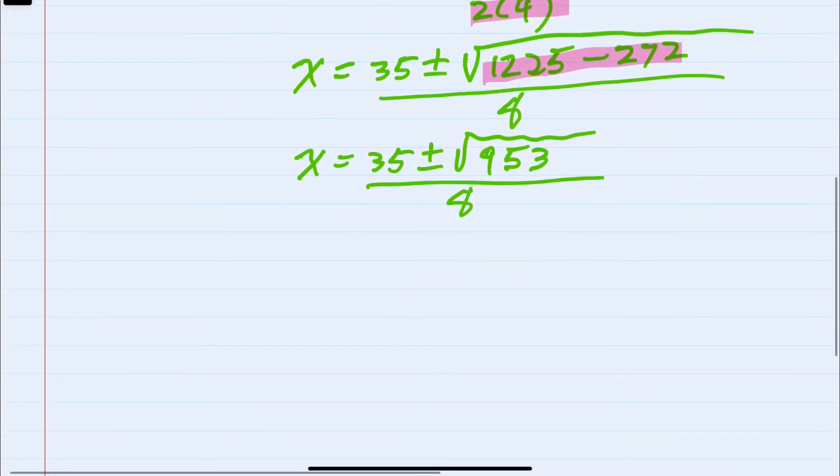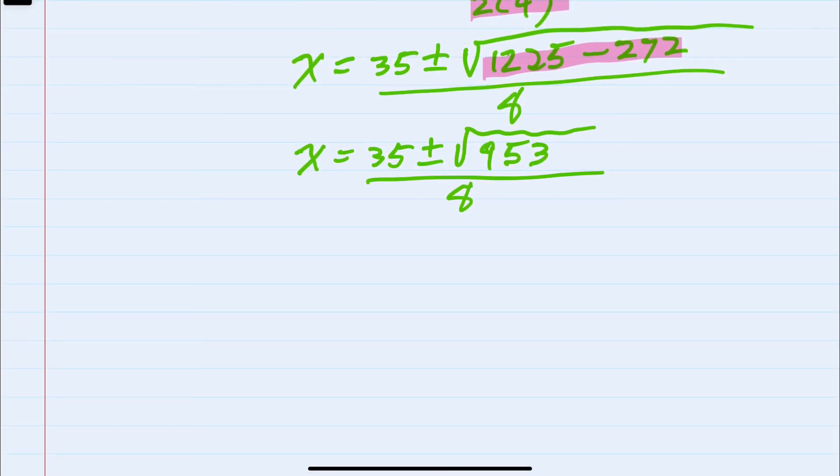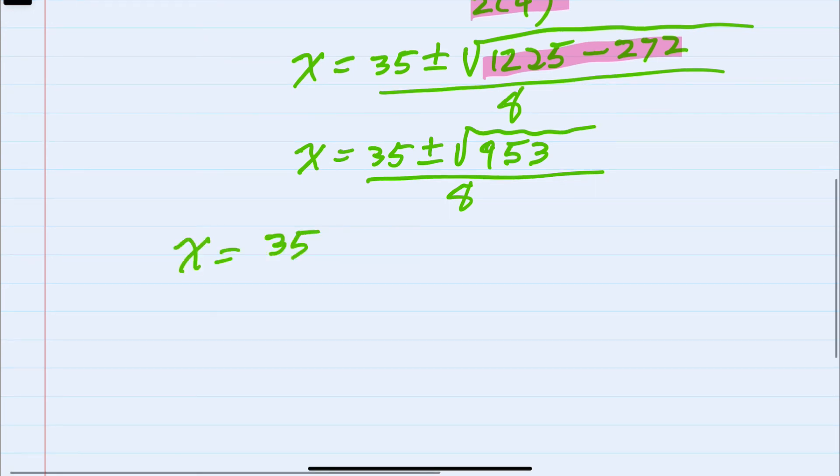So we have two solutions that we'll use our calculator to find in decimal form. The first being 35 plus the square root of 953 over 8. The second, 35 minus the square root of 953 over 8.